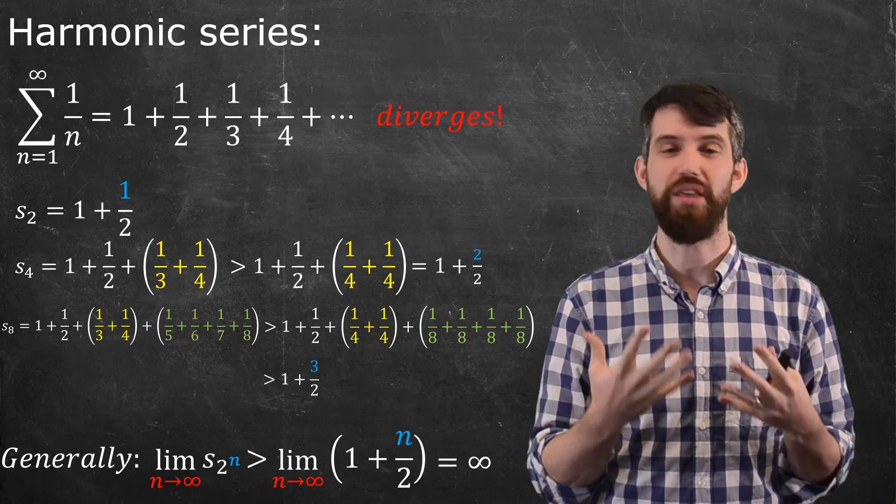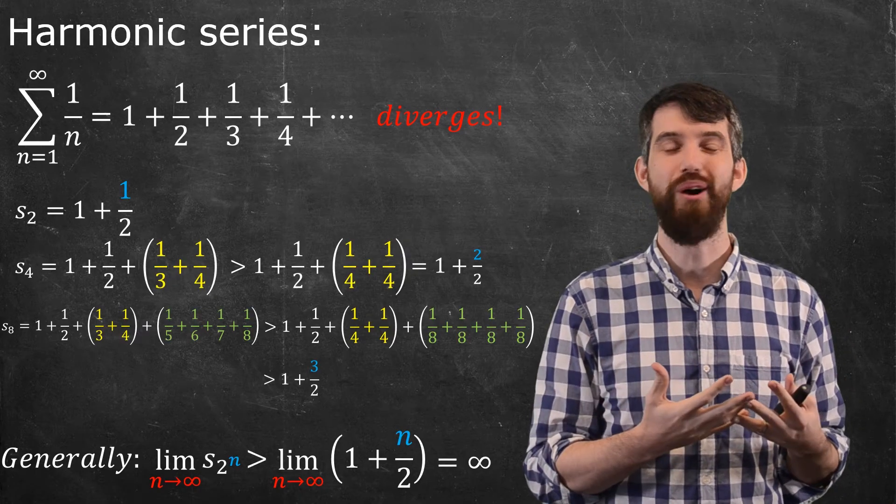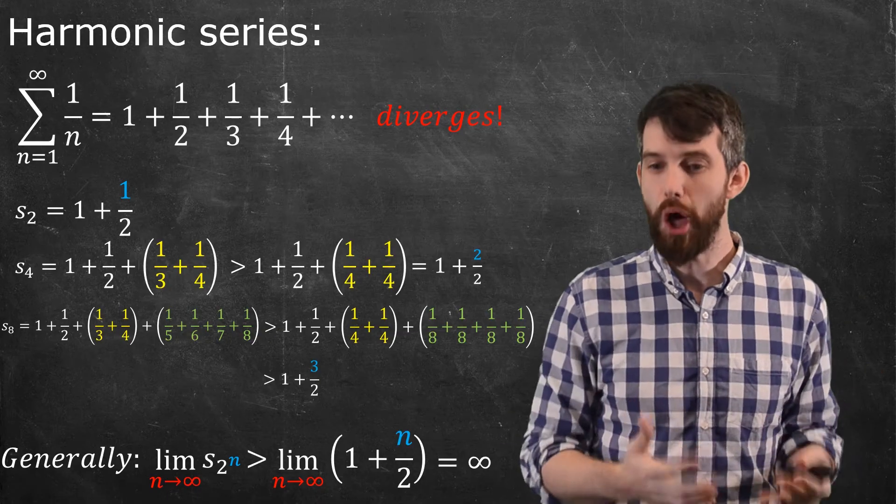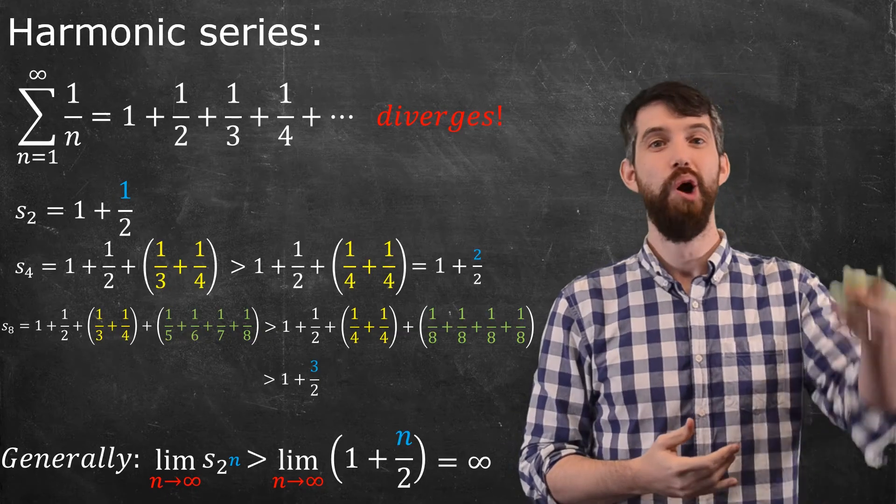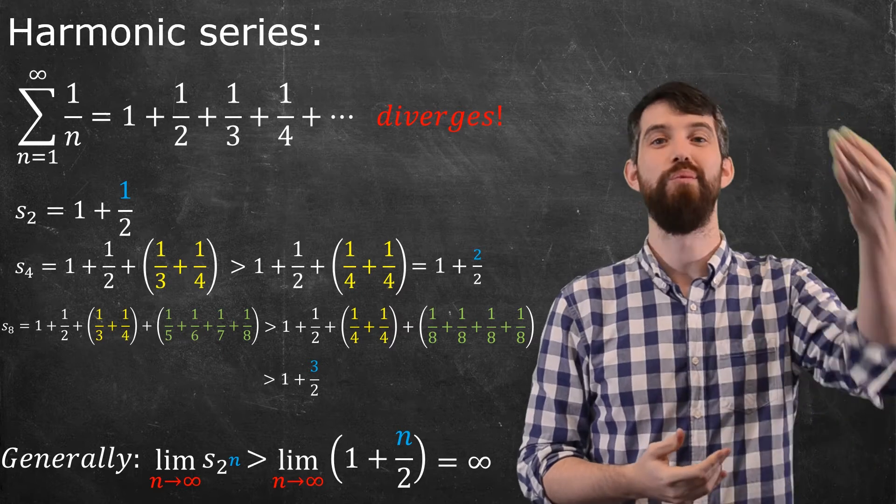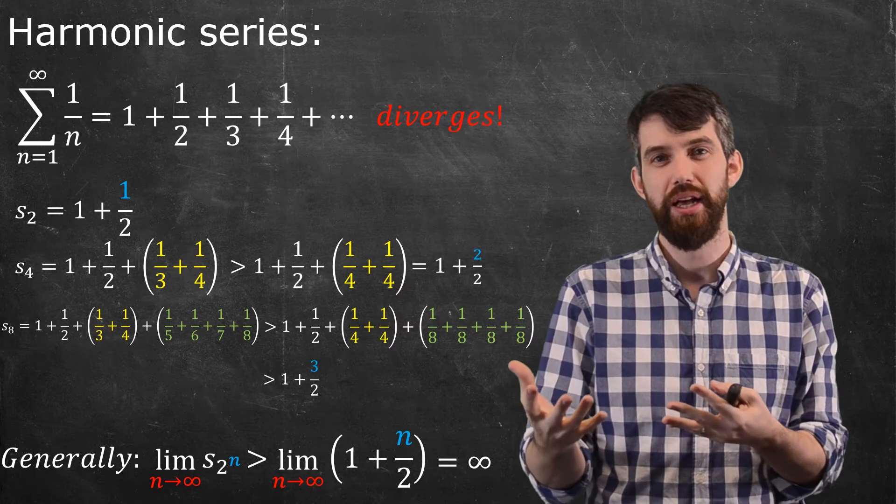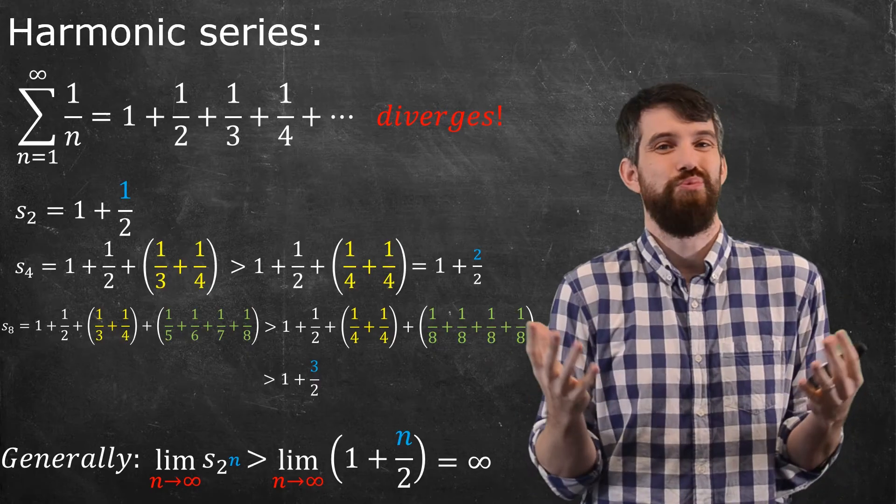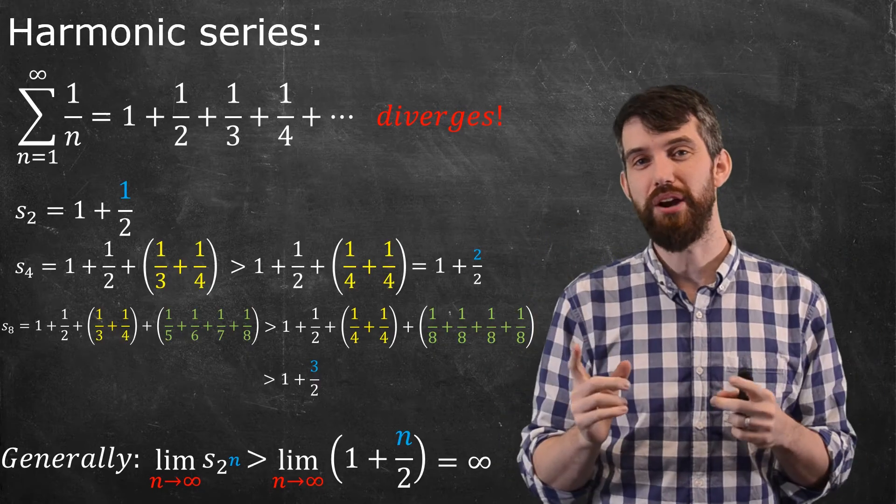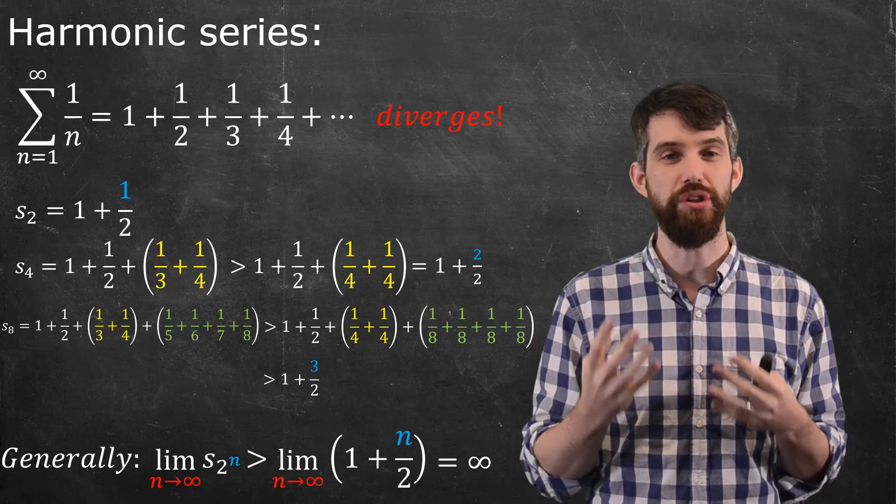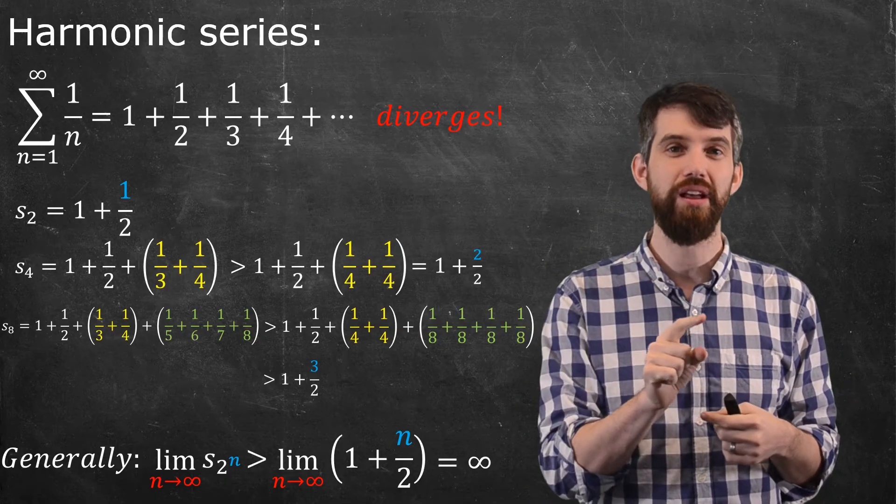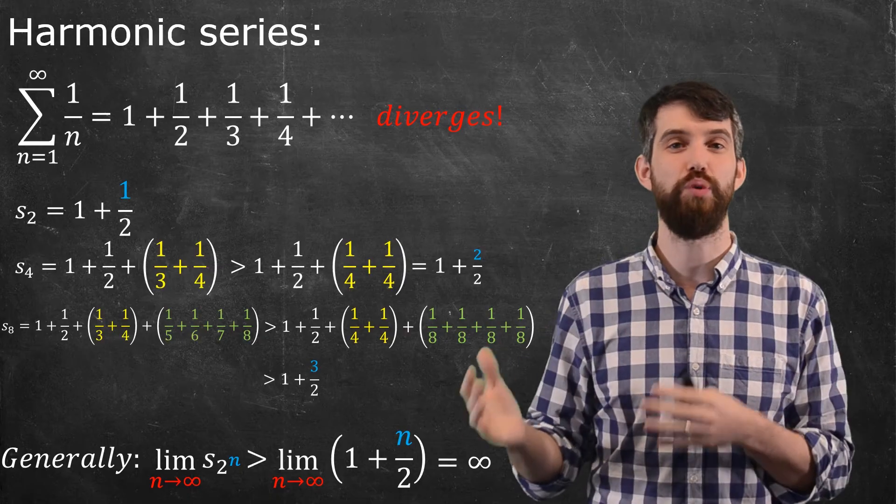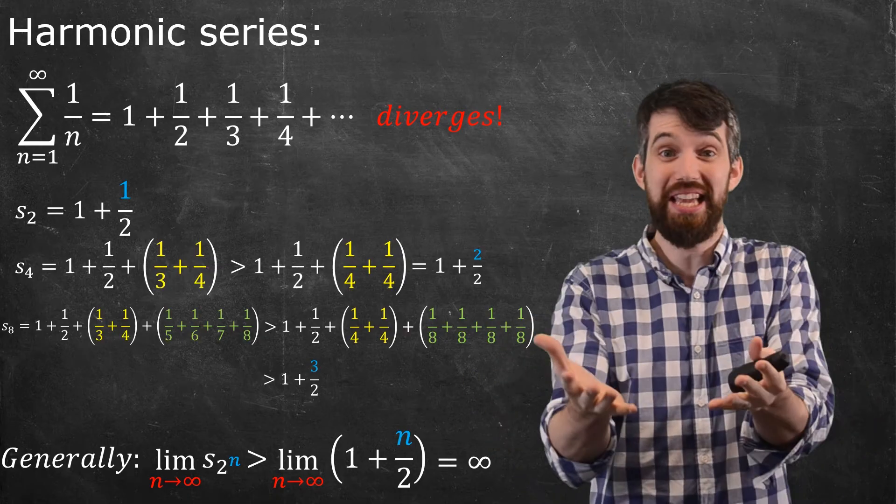But how many terms do you think you might need to add up to, say, a hundred? Now, admittedly, it's going to take a lot of terms. You start adding things like one one hundredth, one one oh one, one oh two. These are really small numbers. So to add up to 100, you're going to need a lot. But how many do you really need? Well, it turns out if you want to add up to 100, you need more than 10 to the power of 43 to be able to add up to 100.